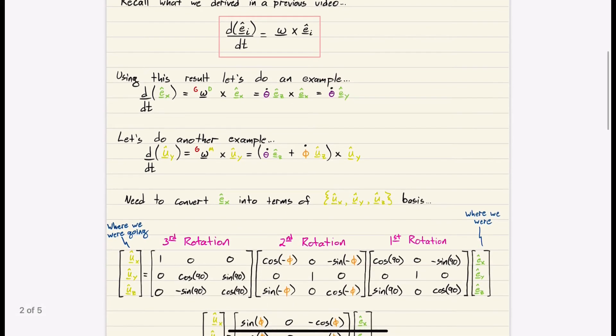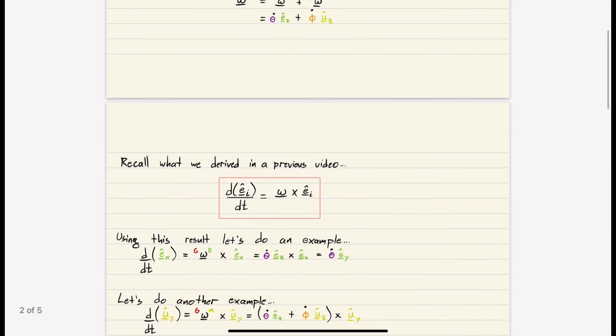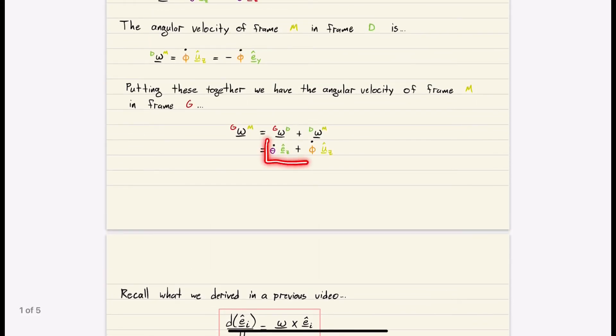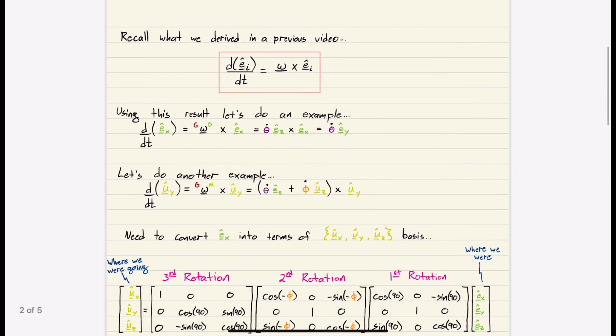Let's do another example. Say we have, we want to find the rate of change of UY in our M basis, our yellow basis. Well, we need the absolute angular velocity, which is M in G, which we just found up above was this guy right here. That's the absolute angular velocity of M in G. And we cross this with the vector itself, with UY. Cross it with UY.